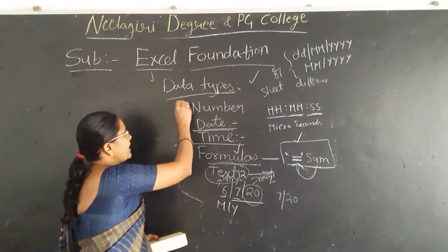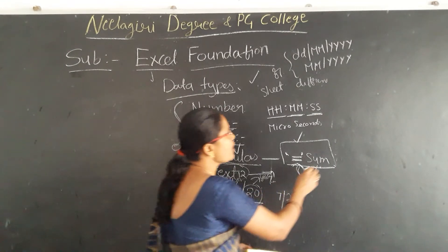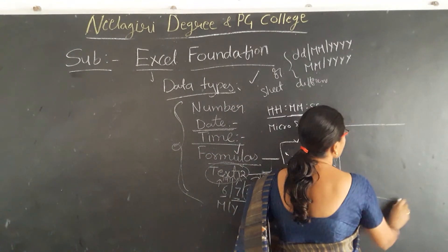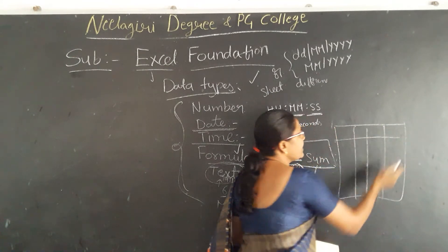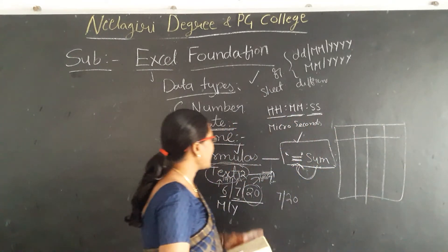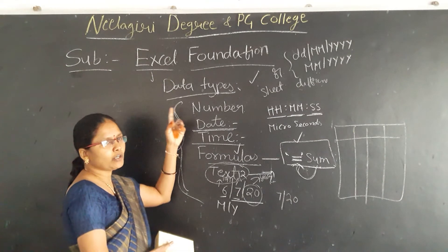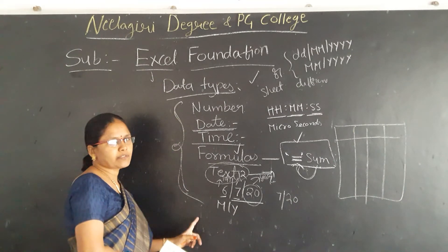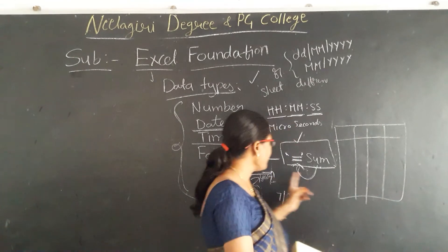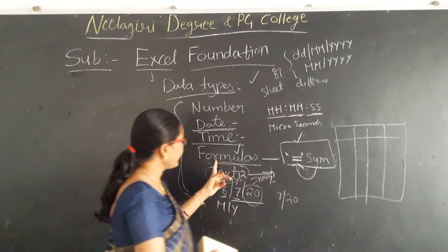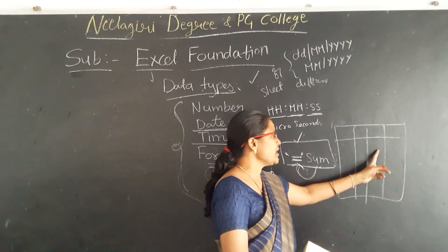These are the different types of data. We can store them all in a single sheet. Based on user requirement, they want to store different types of data in a single sheet and perform different calculations in that particular sheet.